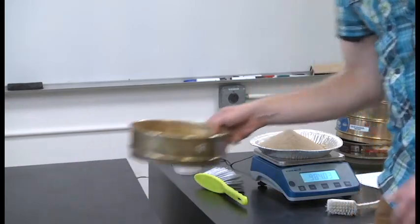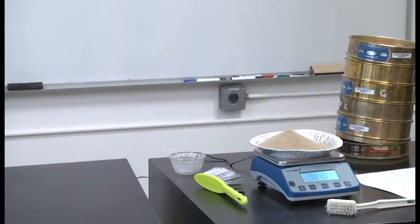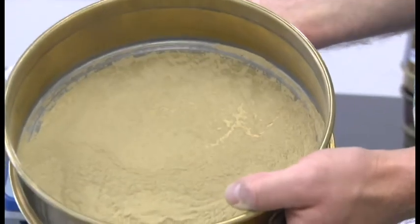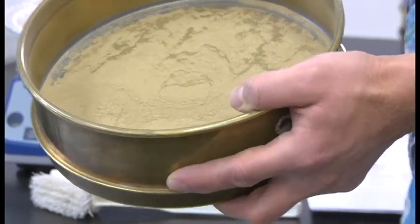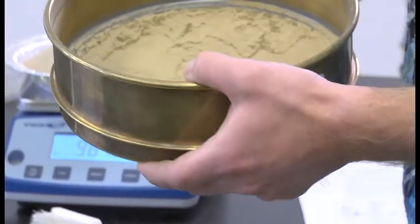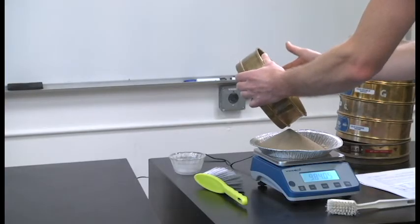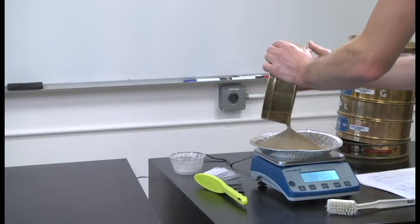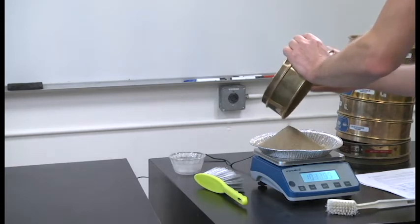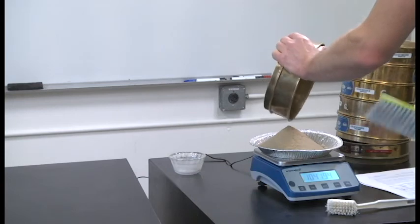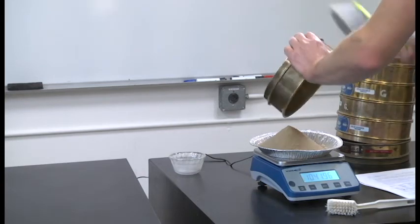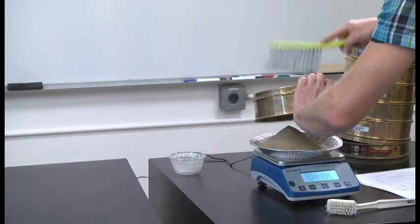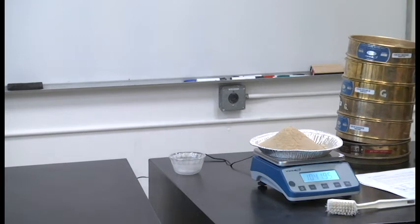Finally, this should be everything that's left. Everything we have in here is silt and clay size. This is a very fine powder at this point. In principle, I should get the same mass when I pour this out, because I've been accumulating. I'll pour this out on the scale. I'll record the final mass.